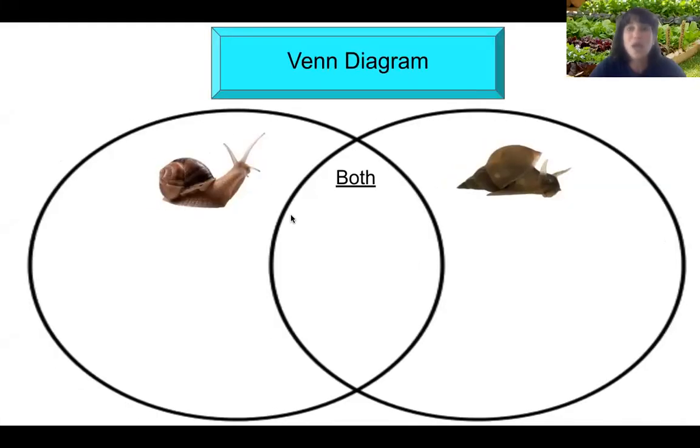Hi scientists. Today we're going to be comparing land snails to water snails using a Venn diagram. We're going to be seeing what things belong to only land snails and what types of characteristics belong to only water snails, and what things they have in common — what belongs to both. Let's take a look at our Venn diagram so that we can start seeing how to organize our information on snails.